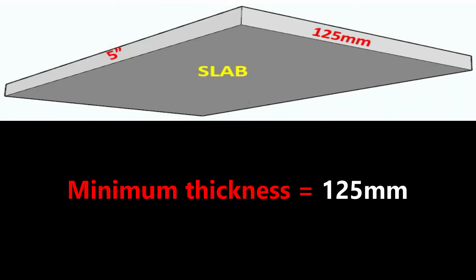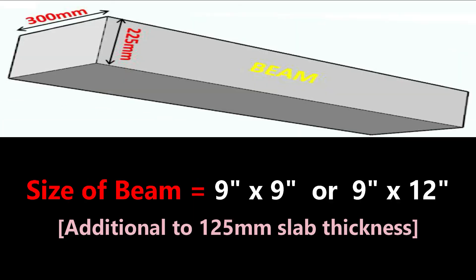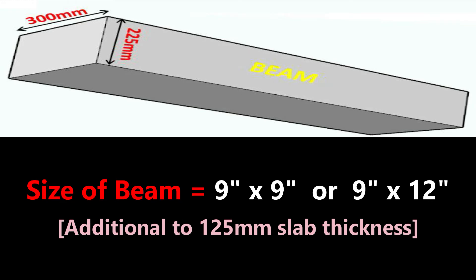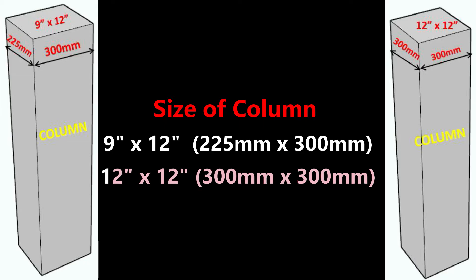For G+1 and G+2 story buildings, the minimum slab thickness is 5 inch, that is 125 mm. The minimum beam size is 9 inch by 9 inch, or for a G+2 story building, 9 inch by 12 inch beam is also used, in addition to the 125 mm slab thickness. The minimum column size is 9 inch by 12 inch, that is 225 mm by 300 mm, or 12 inch by 12 inch can also be used.